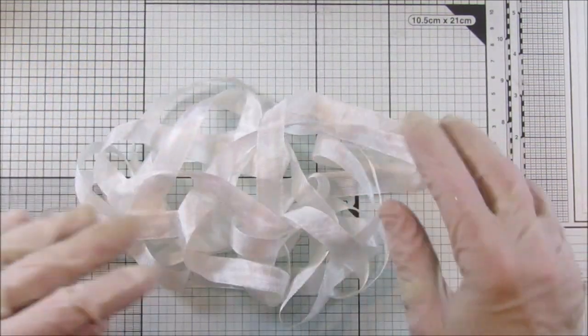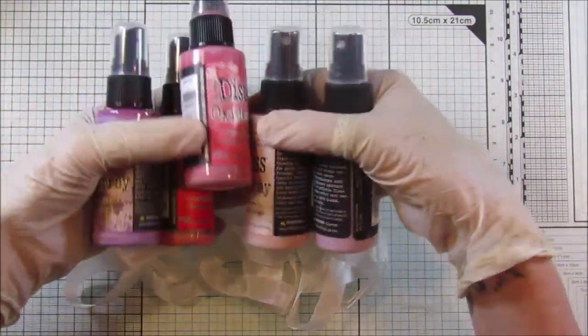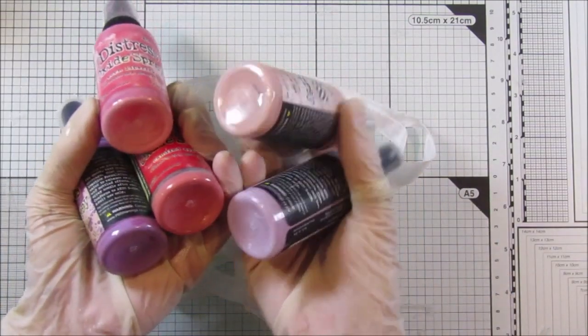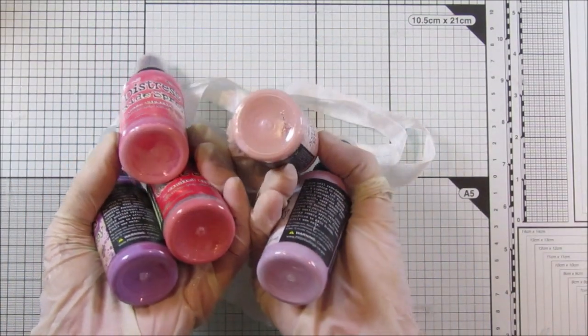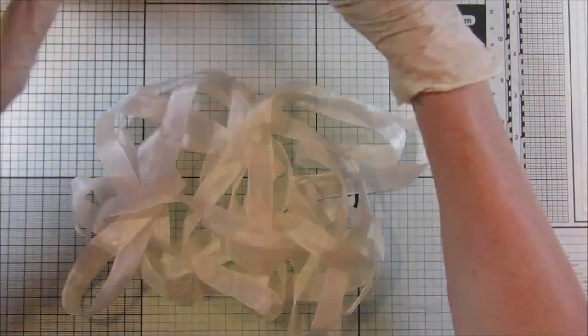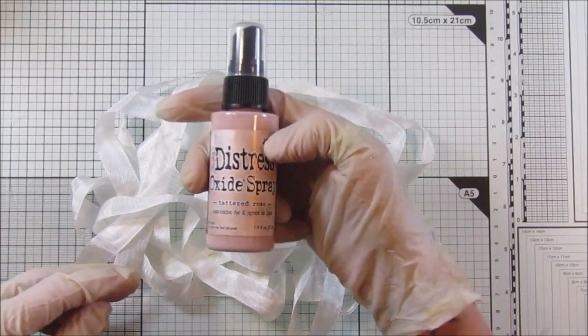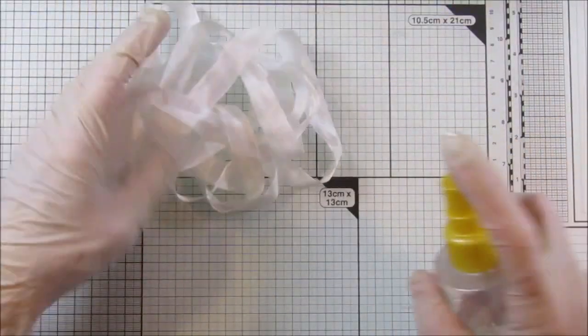Now I use the hug snug which I absolutely love. So I've just taken a length off here. I get my hug snug from Etsy. So I've got some colors here, but the one that I think will probably work is this one which is the tattered rose. But they are all really lovely. I love these oxide ink sprays.